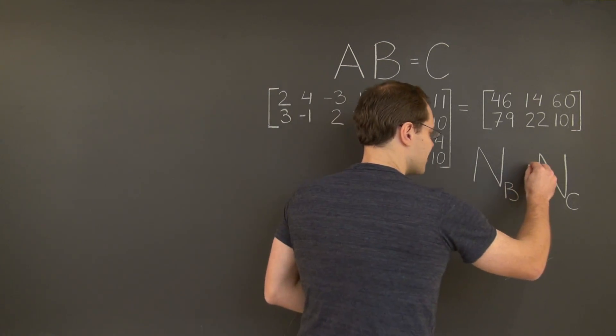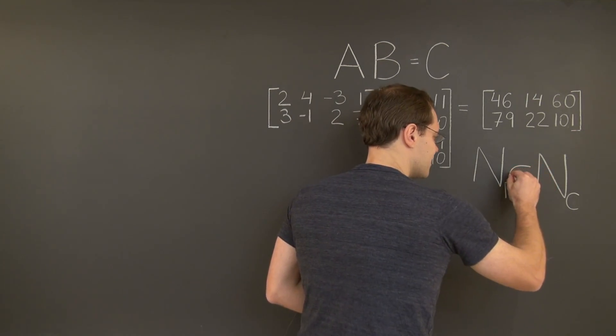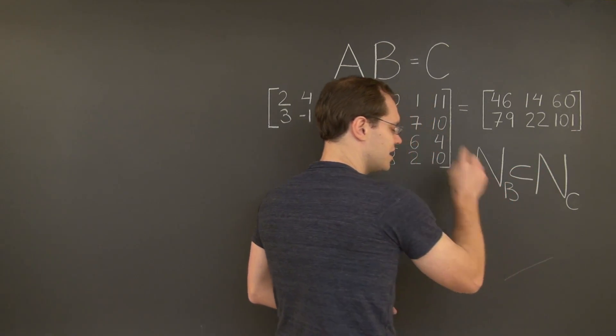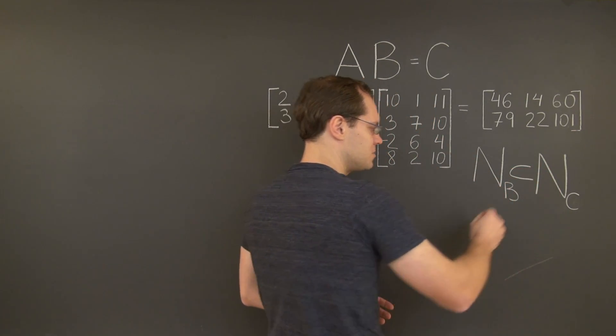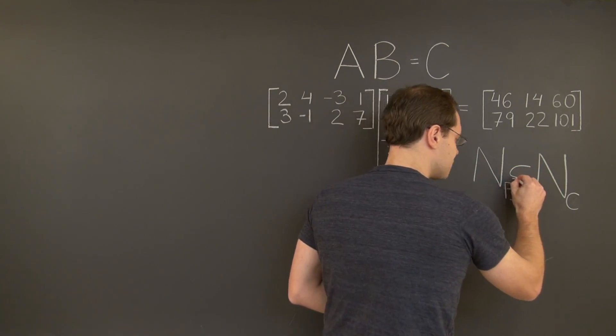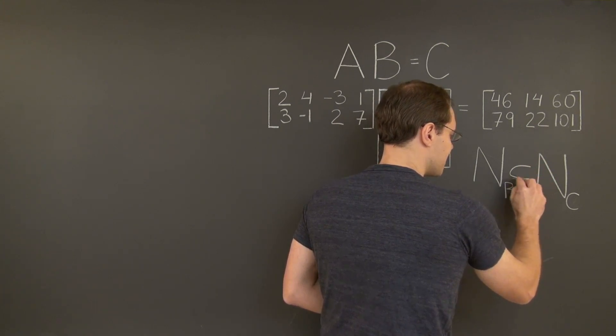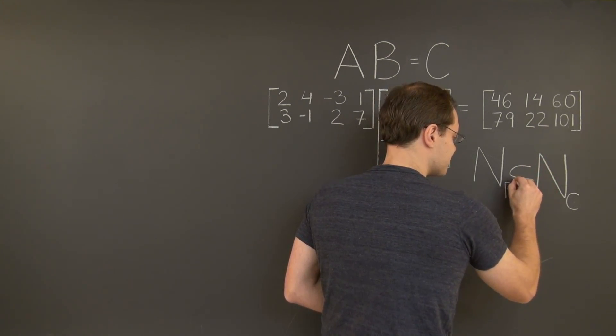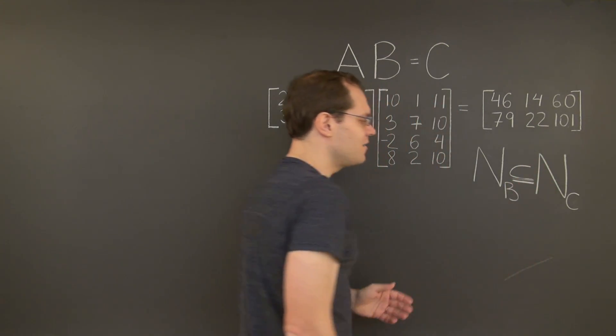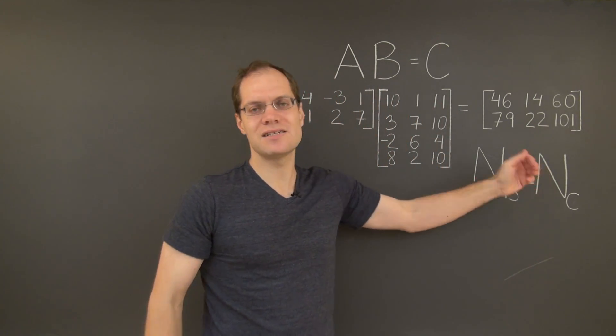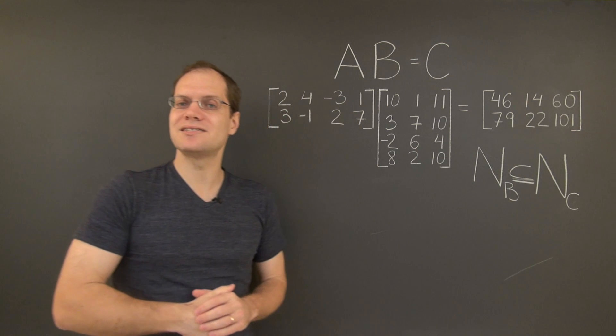So the null space of the matrix B is a subspace of the null space of the matrix C.